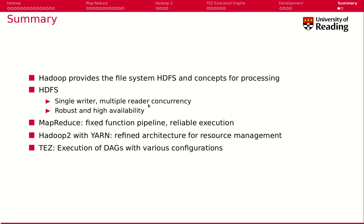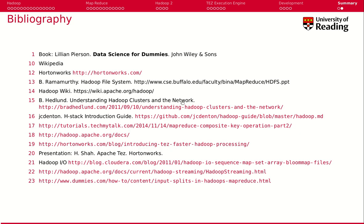To sum up today's lecture: Hadoop provides the file system HDFS and the concepts for processing. HDFS is a single-writer, multiple-reader concurrency model — only one process can write to a file at a time, but that's enough for MapReduce because one reducer writes to one file. It's robust and highly available. With MapReduce we have a fixed function pipeline, but with very reliable execution. Hadoop 2 with YARN has a refined architecture for better resource management, and TEZ allows us to execute DAGs of computation with various configurations. Have a look at the exercises — they help you understand the necessity of such architectures.